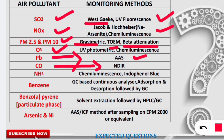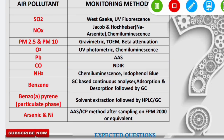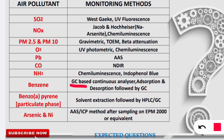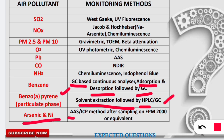Lead, an important criteria pollutant, is measured with atomic absorption spectrophotometry. Carbon monoxide is monitored using the NDIR (Non-Dispersive Infrared) monitor method. Ammonia is measured using the chemiluminescence method and also the indophenol blue method — this has been asked frequently. Benzene is monitored using GC-based continuous analyzers, adsorption, and desorption followed by gas chromatography. Benzo[a]pyrene is monitored by solvent extraction followed by HPLC coupled with gas chromatography. Arsenic and nickel are monitored using atomic absorption spectrophotometry or the ICP method after sampling on EPM 2000 or equivalent filters.